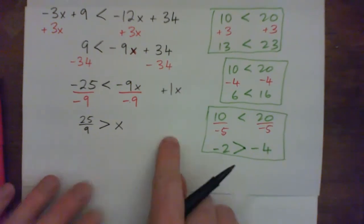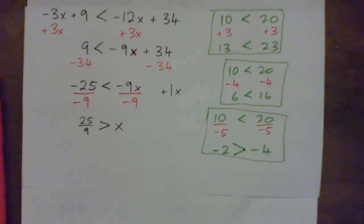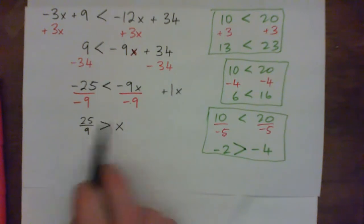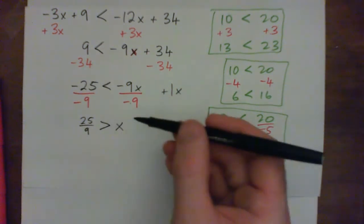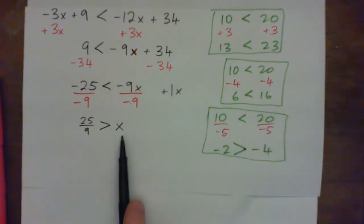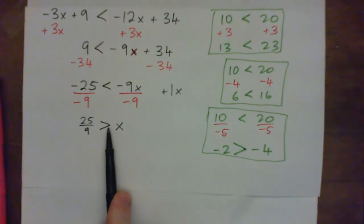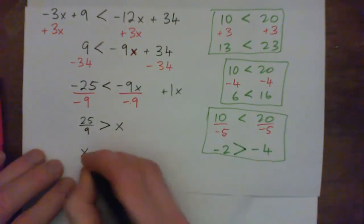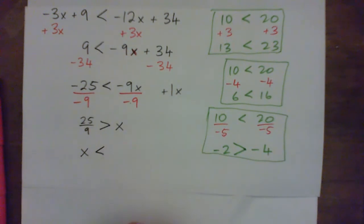Now there's two ways to read this. I want you to read it from right to left. It says 25 ninths is greater than x. But now read it the other direction. x is less than 25 ninths. And we can write it that way too. x is less than 25 ninths. And just for fun, I'm going to put this as a mixed number.